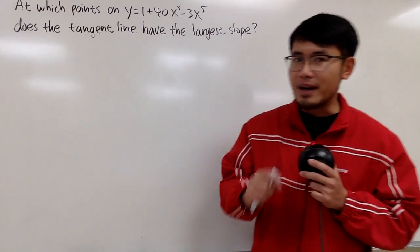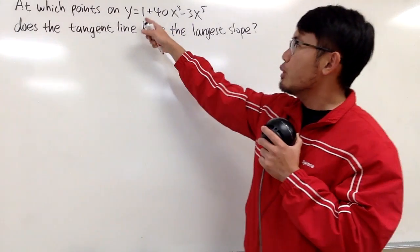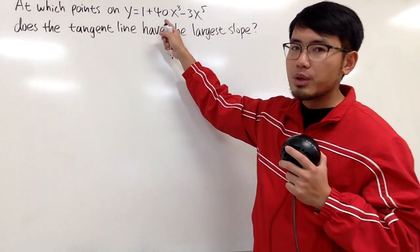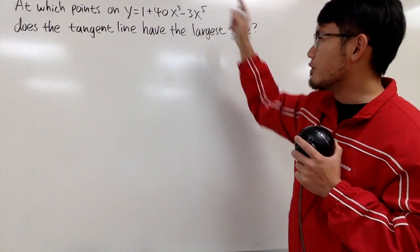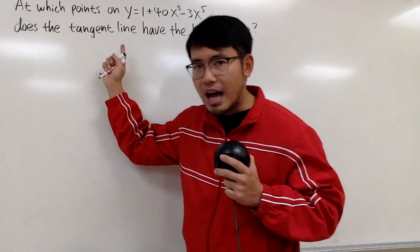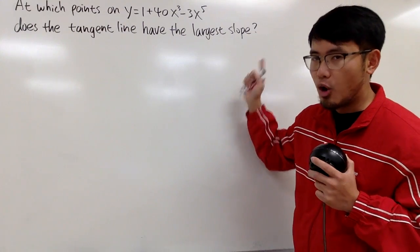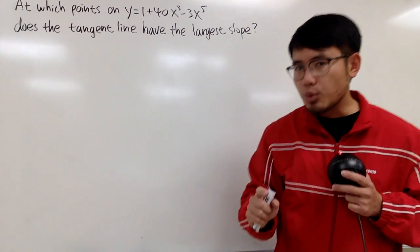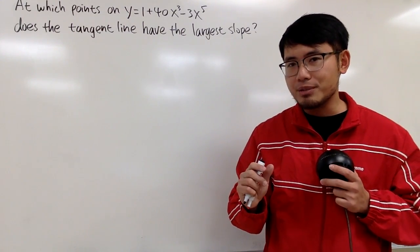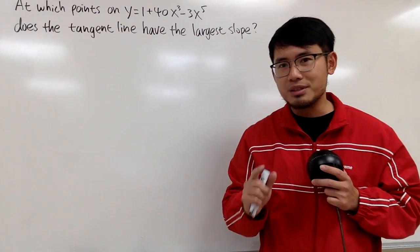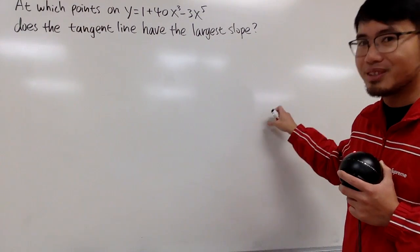In this video, we're going to find out at which points on the curve y = 1 + 40x³ - 3x⁵ does the tangent line have the biggest slope. This question is actually kind of confusing for some students, so be sure you pay close attention.